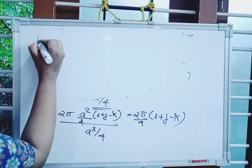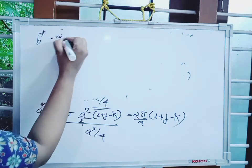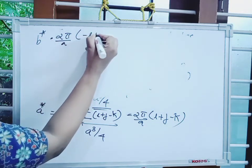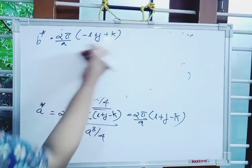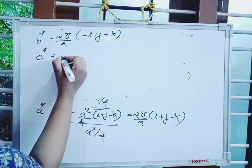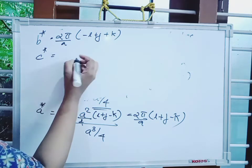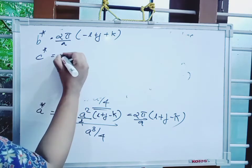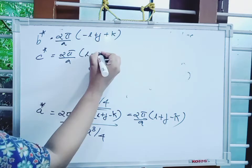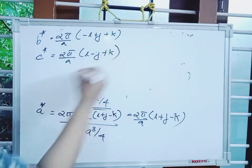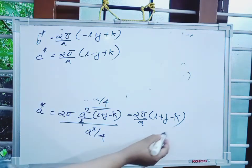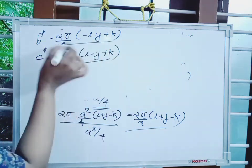Similarly, b* is equal to (2π/a)(−i + j + k), and c* is equal to (2π/a)(i − j + k). These are the reciprocal lattice vectors for the FCC lattice.